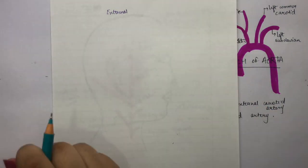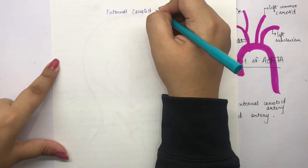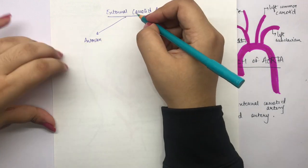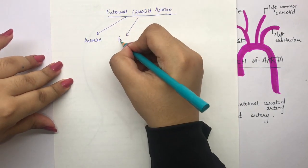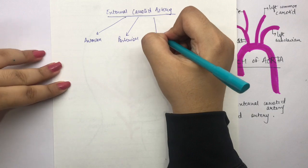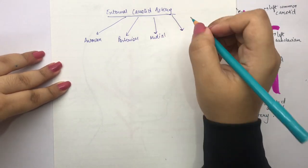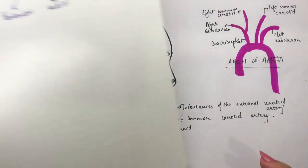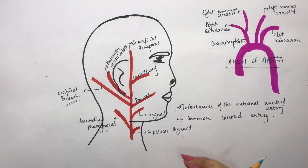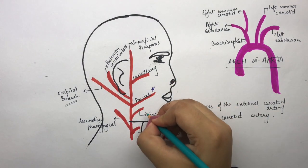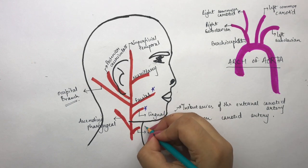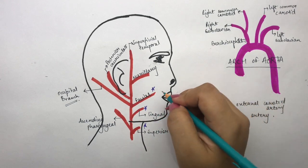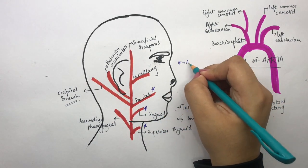The external carotid artery is distributed into four regions in the head: anterior, posterior, medial, and terminal branches. The anterior branches are the facial branch, the lingual branch, and the superior thyroid branch, as they go anteriorly towards the face.